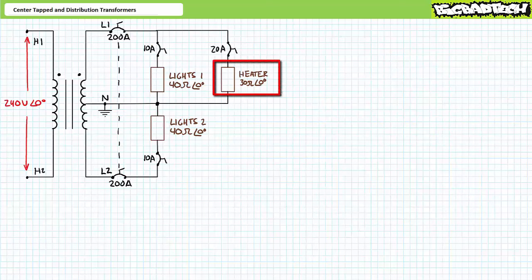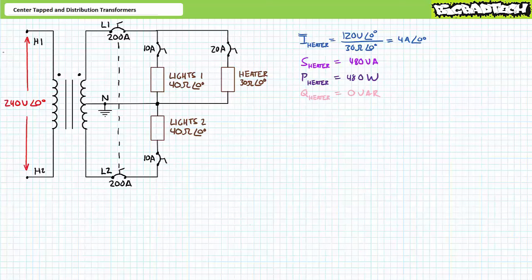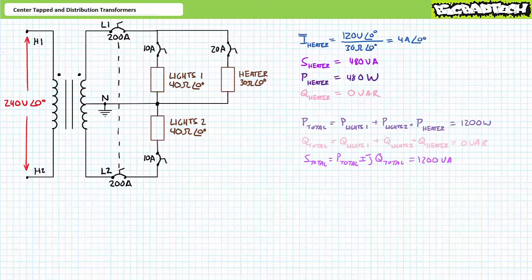Let's say a heater modeled as a 30 ohm purely resistive load and protected by a 20 amp circuit breaker on L1 turns on. The presence of the heater in no way, shape, or form affects the two lighting loads. They continue to draw 3 amps of current out of phase with one another and each consumes 360 watts of power. An application of Ohm's law demonstrates the heater draws 4 amps at an angle of 0 degrees from L1. The heater consumes 480 volt amperes of apparent power, of which 480 watts is real power and zero vars reactive. In totality this system is now supplying 360 plus 360 plus 480, or 1200 volt amperes.